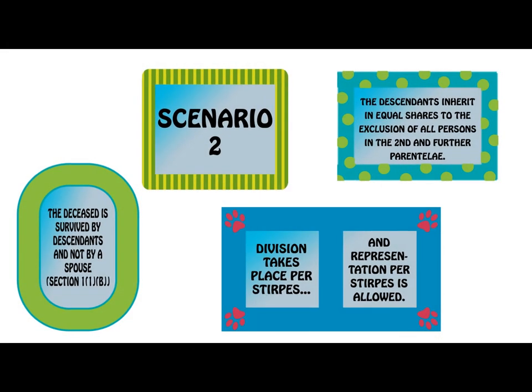In scenario two, we look at a situation where the deceased is survived by descendants and not by a spouse. Where the deceased is survived by descendants and not by a spouse, the descendants will inherit the entire estate equally and representation will be used where necessary. In the law of intestate succession, we use Foote's golden rule. This rule states that the estate does not climb. We therefore try and look for the descendants to inherit, which might result in looking at great-great-great-grandchildren in order to see if they can inherit.